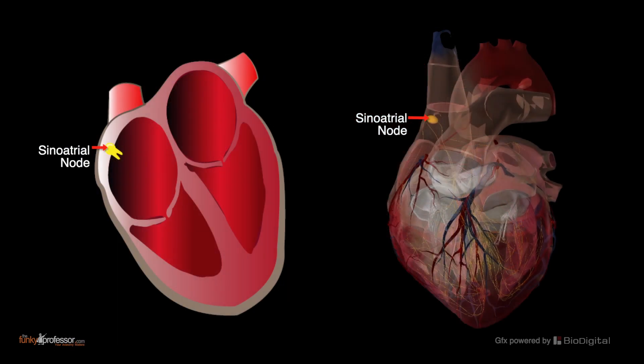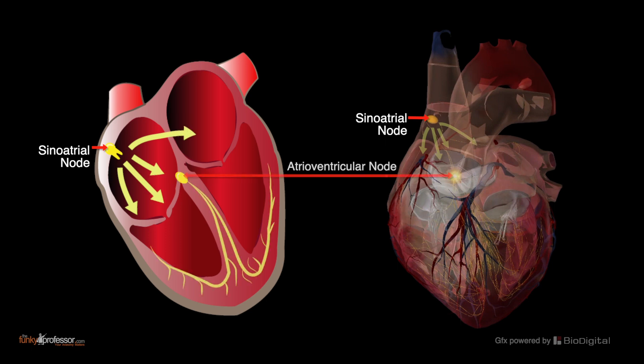From the sinoatrial node, the impulse is transmitted to the next node in the hierarchy, called the atrioventricular node. It is situated at the lower end of the interatrial septum. Between the sinoatrial node and the atrioventricular node are tracts of cardiac myocytes which hasten the impulse from the sinoatrial node to the AV node.